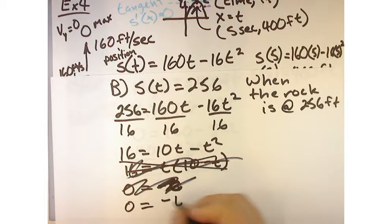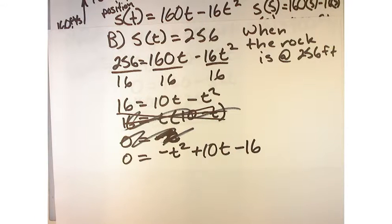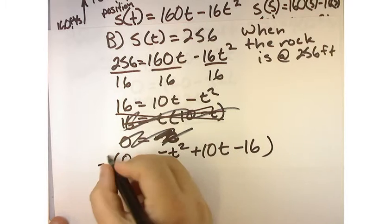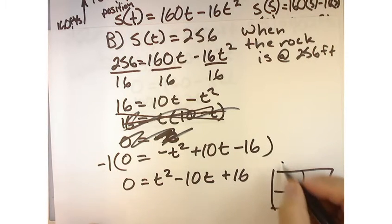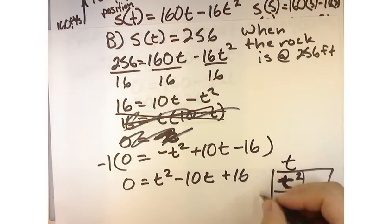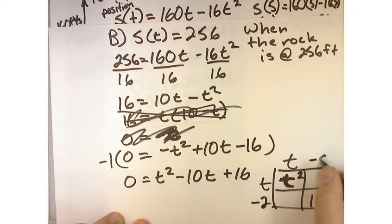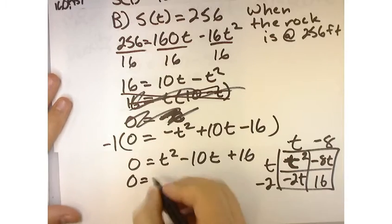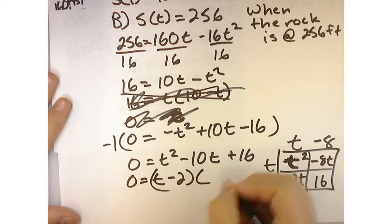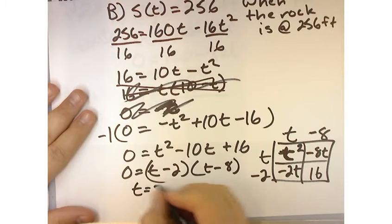Let's just move the 16 over here and I get 0 equals negative t squared plus 10t minus 16. Now, I don't like when it comes to factoring this thing out, I don't like a negative t squared so I'm going to multiply everything by negative 1 and that gives me 0 equals t squared minus 10t plus 16. So, we're going to try to factor this with the guess and check method. So, I'm going to say t squared and 16 over here so I've got t times t. Now, I need two numbers that when I multiply them together they give me a positive 16 but when I add them up they give me a negative 10. Negative 2 and negative 8.